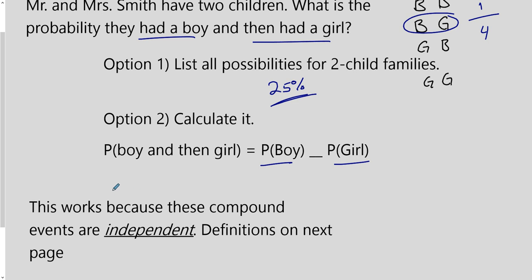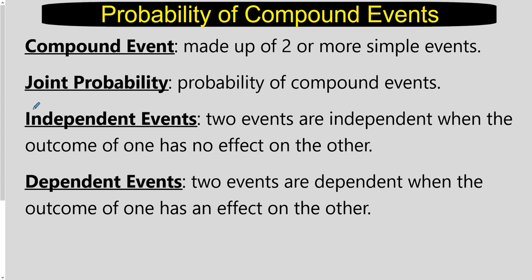This will work because these compound events are what are called independent. A compound event is made up of two or more simple events. A simple event is like having a boy, flipping a coin and getting tails, rolling a die and getting a four, or pulling a card and getting a jack — one thing happening. A compound event combines two of them, like rolling a three and flipping heads, where two different things need to happen. Joint probability is how we calculate the likelihood of that set of things occurring.